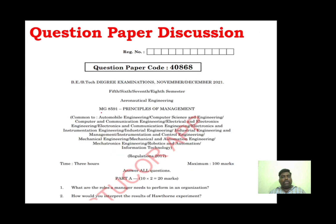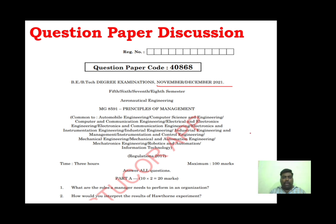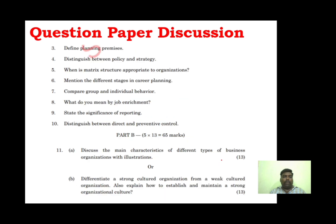Now we will see the question paper discussion. We are taking November-December 2021 as the reference paper. The question paper has 5 questions, and 90% of the two-mark questions are covered. Topics include: formal organization, planning premises, policy and strategy differences, and matrix structure of organization.